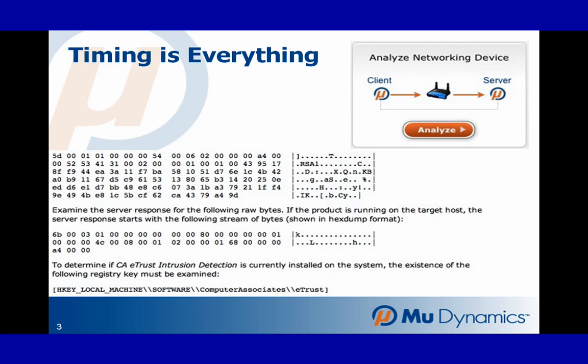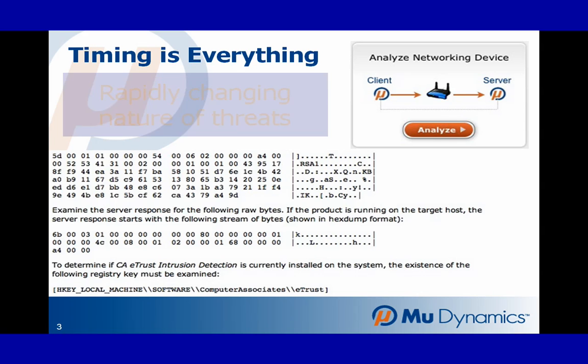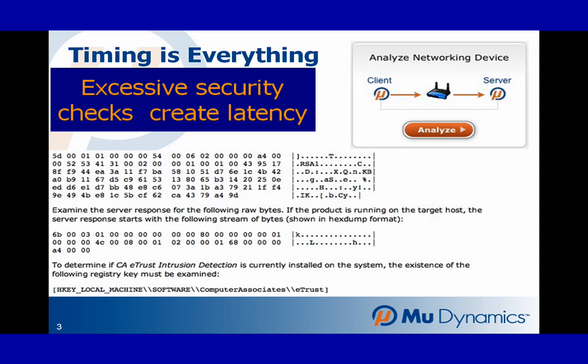A block-everything-we-can-think-of approach is not sustainable for two reasons. The attack surfaces of vital resources change with each code change, so something that needed to be blocked last year may no longer pose a real threat. The second reason is that excessive delays caused by long list checks are almost as bad a problem as the exploit being watched for.